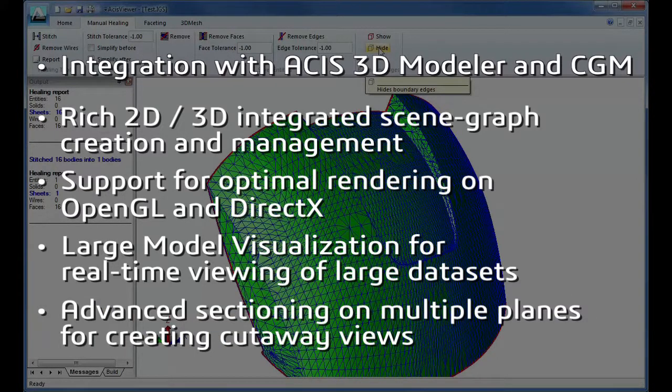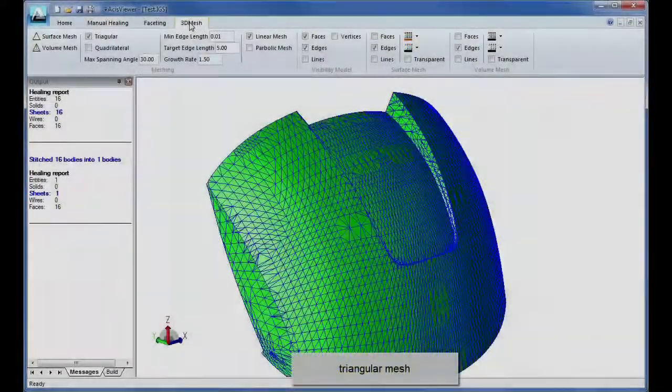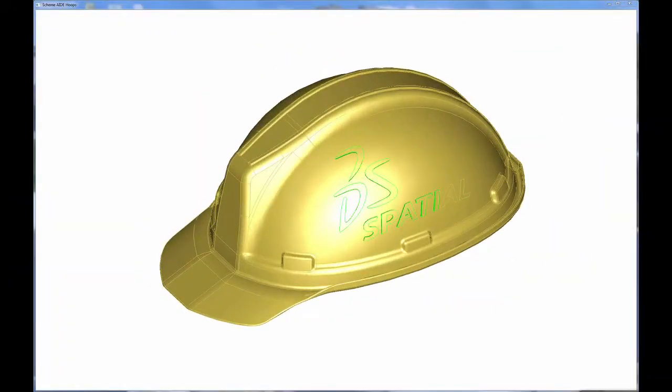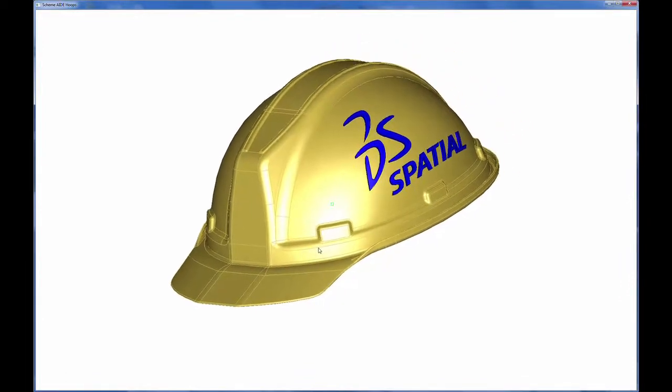Advanced sectioning on multiple planes for creating cutaway views. Hoops Visualize is tightly integrated with Spatial's modelers, ensuring a rock-solid development environment for higher-quality applications, reduced development costs, and quicker time to market.